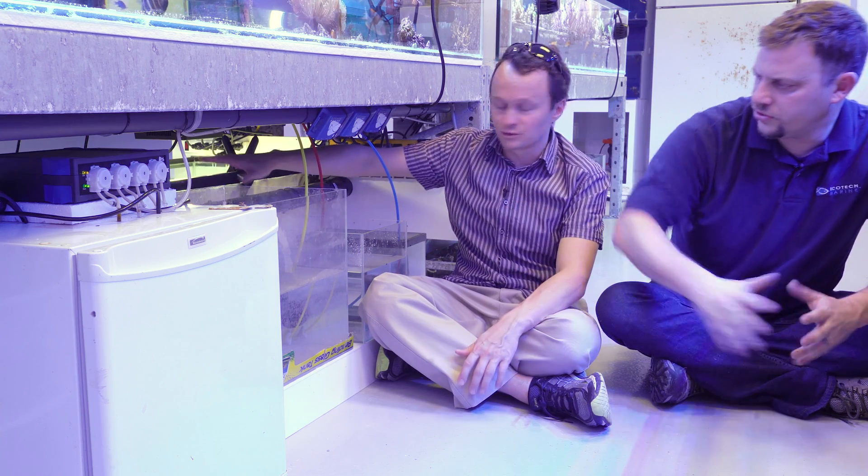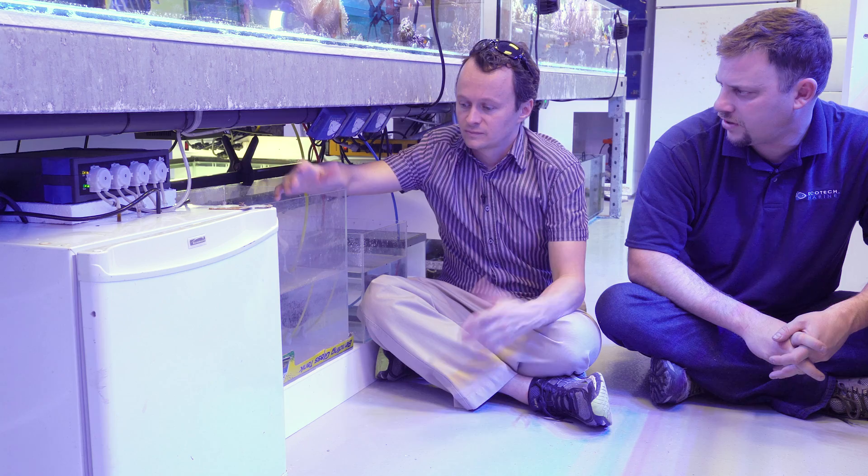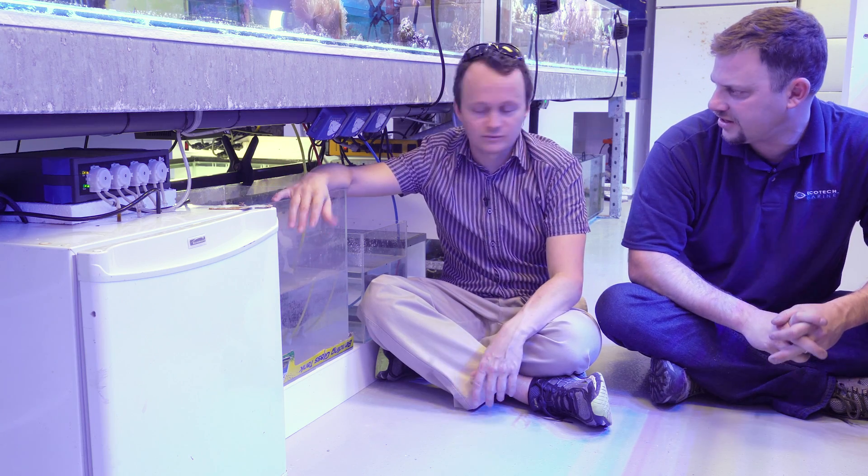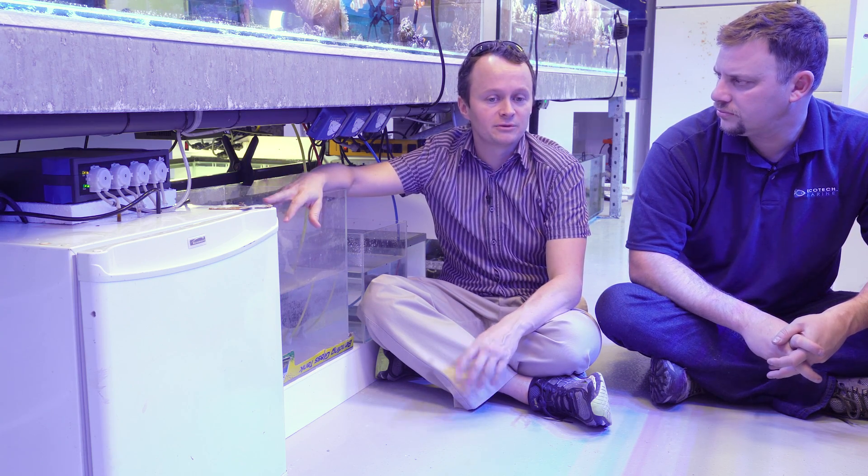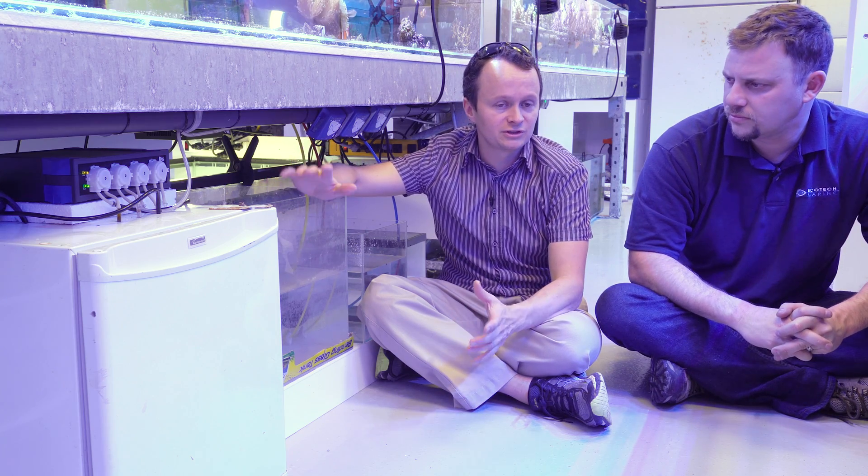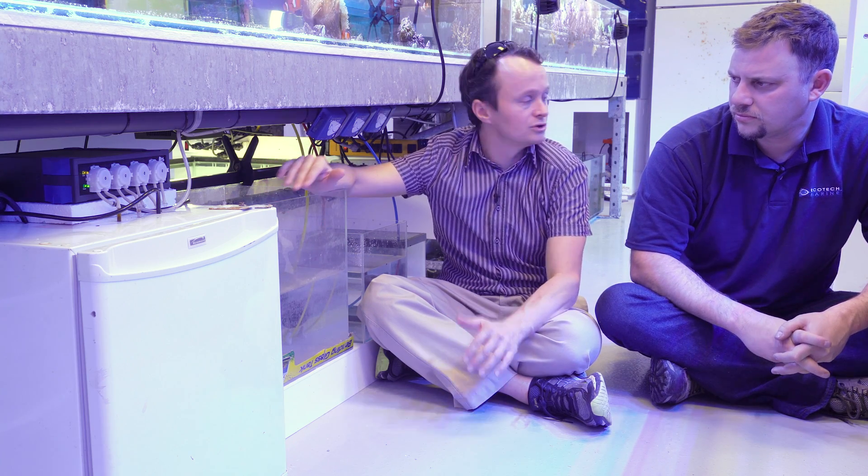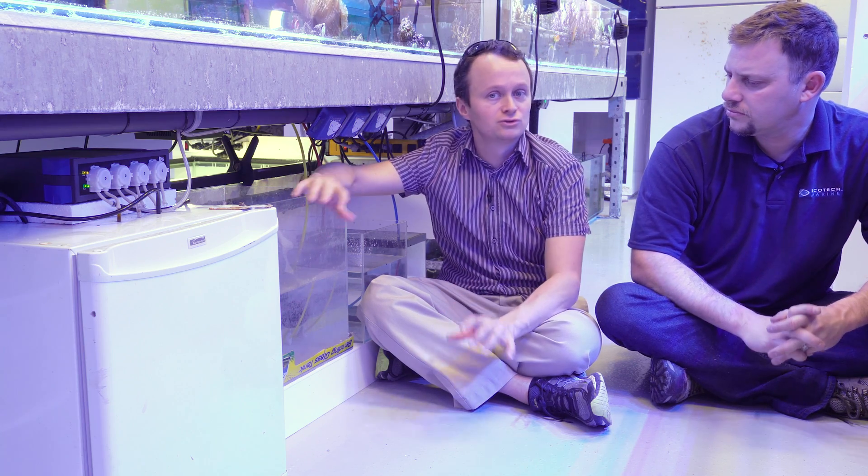And your target parameters are fairly standard as well, right? They are the standard, in fact. So typically on this system, we maintain our alkalinity at around 8 dKH, our calcium at 420, and our magnesium at 1350 to 1400. We don't keep them particularly elevated, but it's not ultra-low nutrient, so we don't keep them particularly low either. It's just at a nice, neutral, safe point.